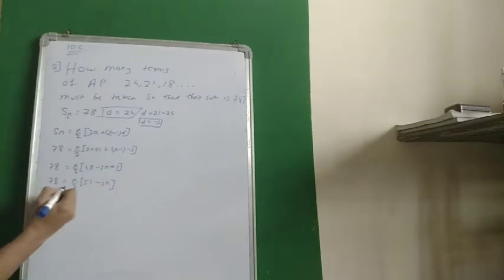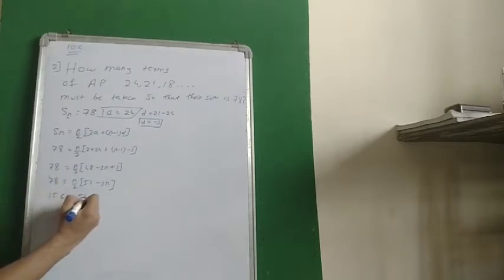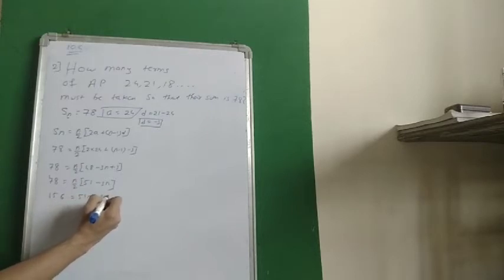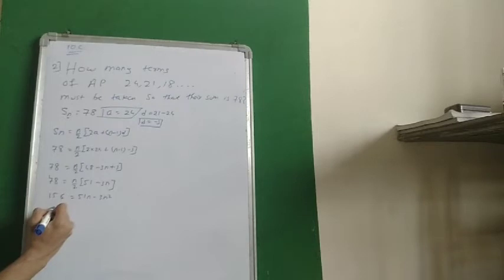2 will go there and multiply to 78. 2 times 78 is 156. 156 is equal to 51N minus 3N square. I'll take all the terms on the left hand side.